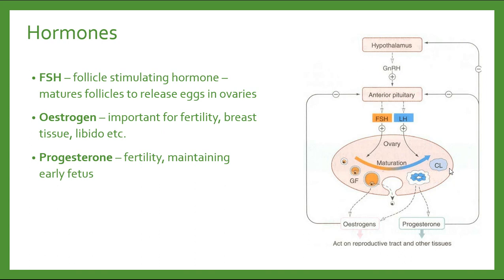Progesterone is also made by the ovary. It's very important in terms of sustaining a pregnancy and maintaining the environment in the early days of a pregnancy by maintaining the lining of the uterus, for example. We also have luteinizing hormone (LH), which is the hormone responsible for actually triggering the release of the egg during ovulation.